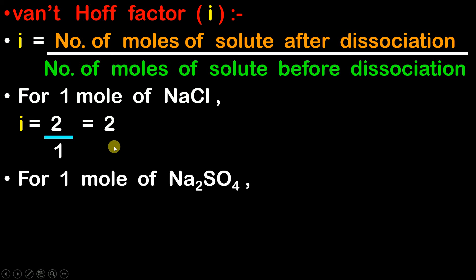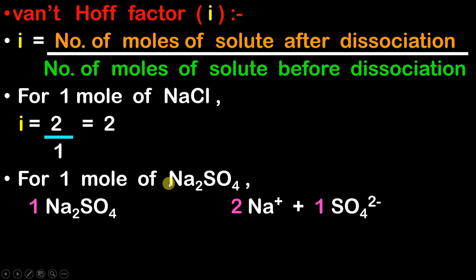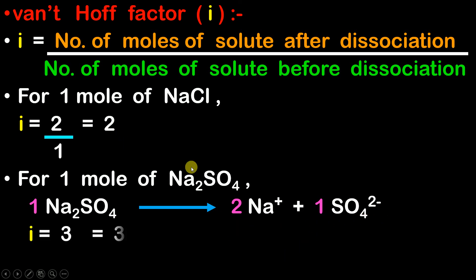For 1 mol of Na₂SO₄, we know that when 1 mol of Na₂SO₄ dissociates, it gives us 2 mols of Na⁺ and 1 mol of SO₄²⁻. So 2 plus 1 equals 3. In the numerator we will have 3 and in the denominator we have 1. So 3 upon 1 equals 3. This is how you find out the value of the Van't Hoff factor.